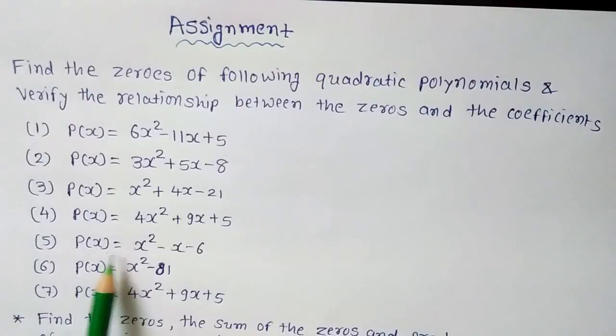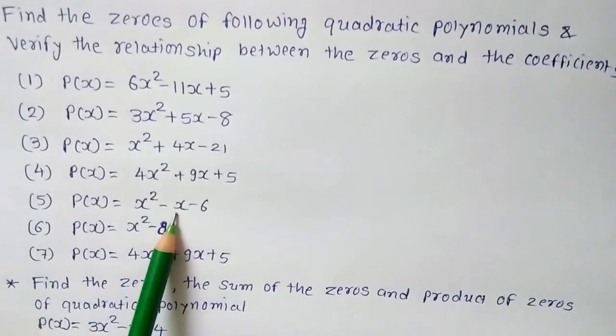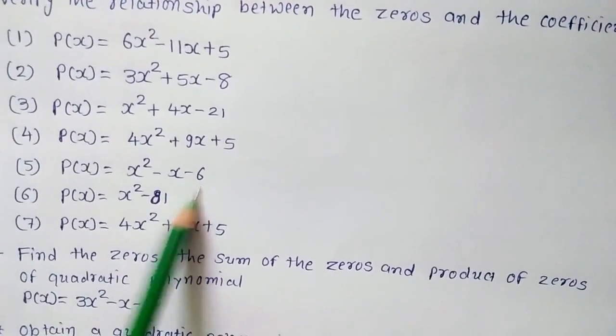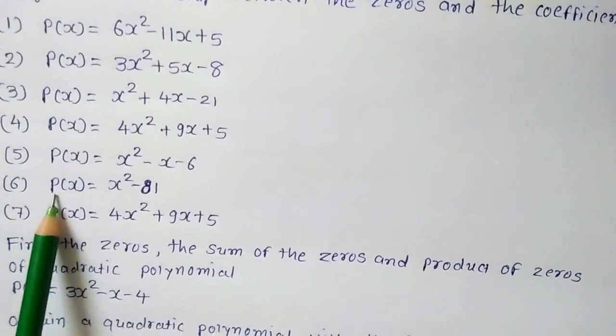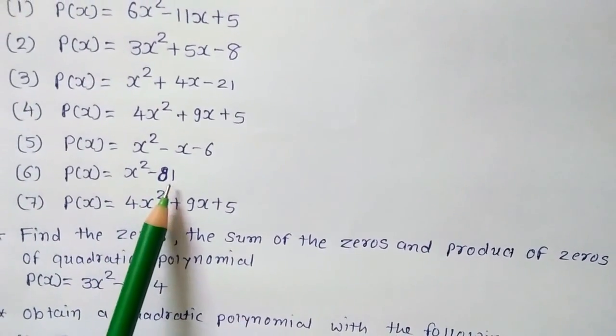Fifth one, p(x) is equal to x² minus x minus 6. Next one, that is sixth, p(x) is equal to x² minus 81.